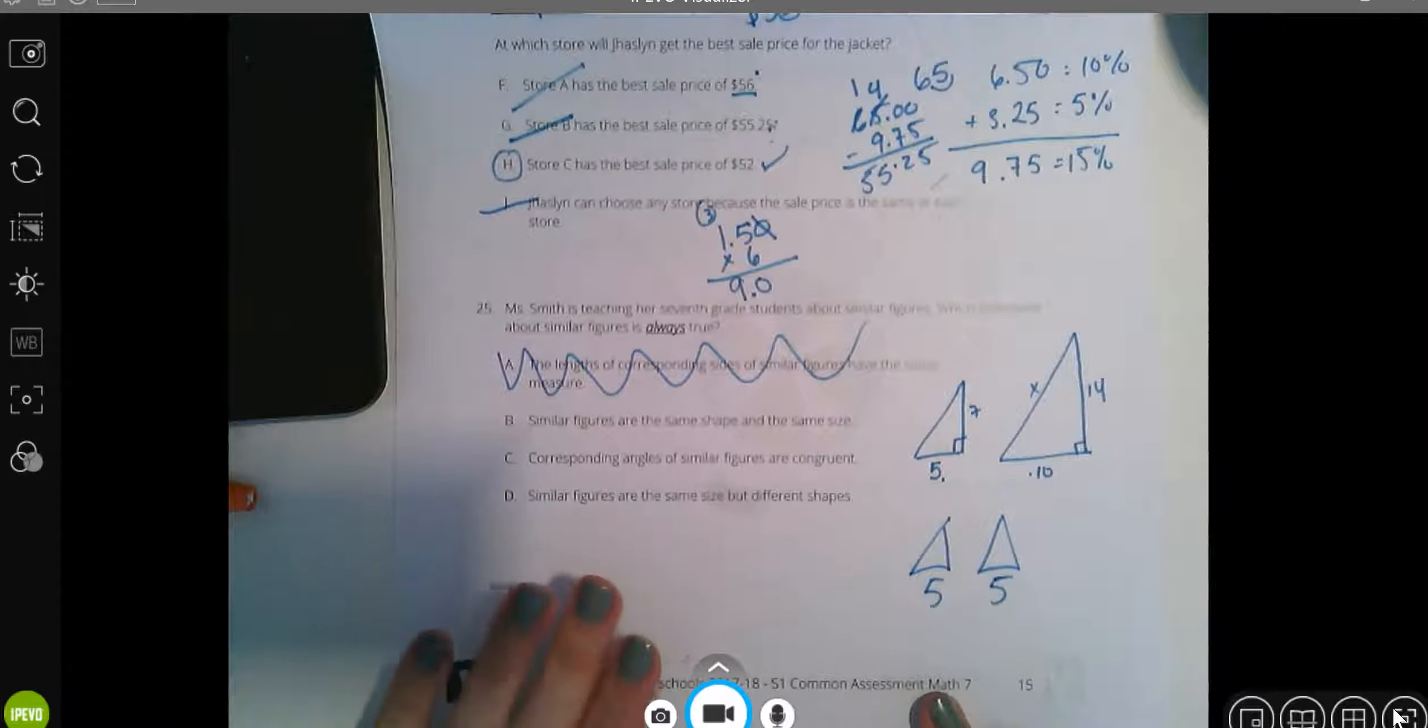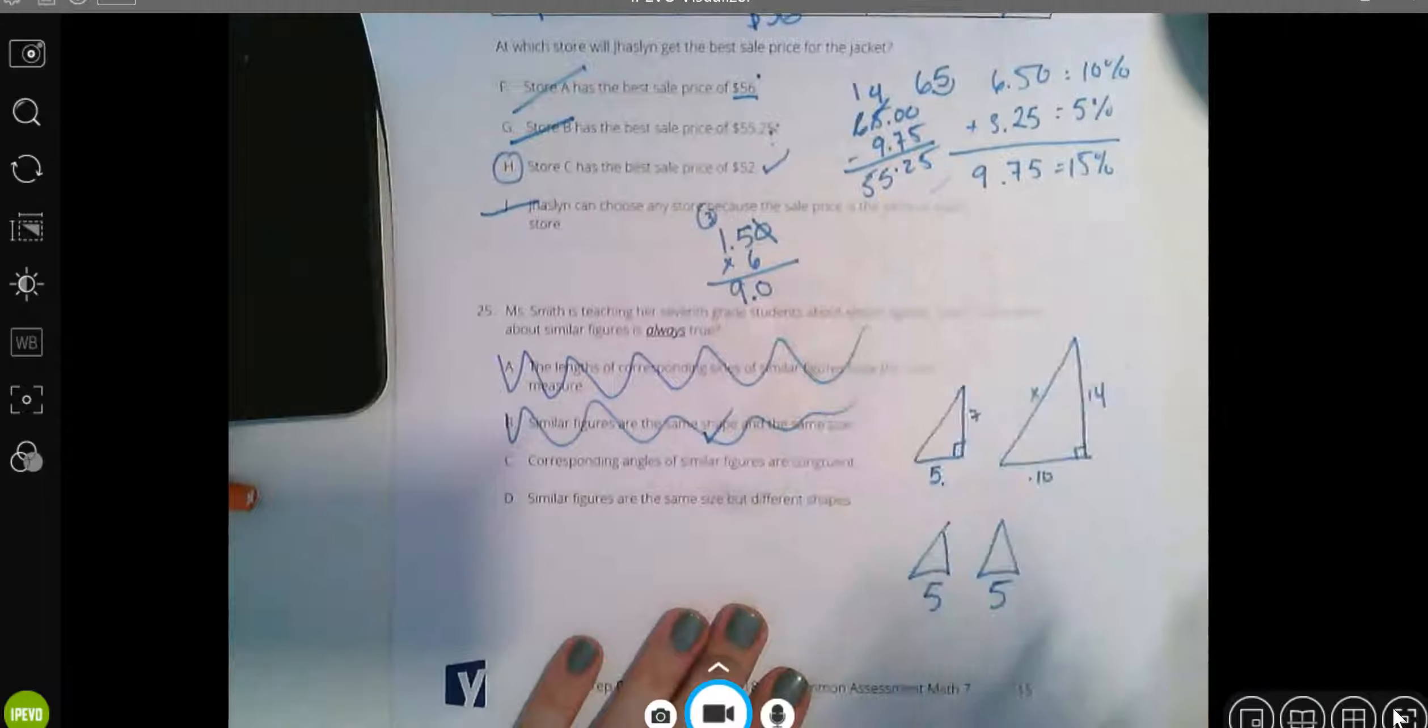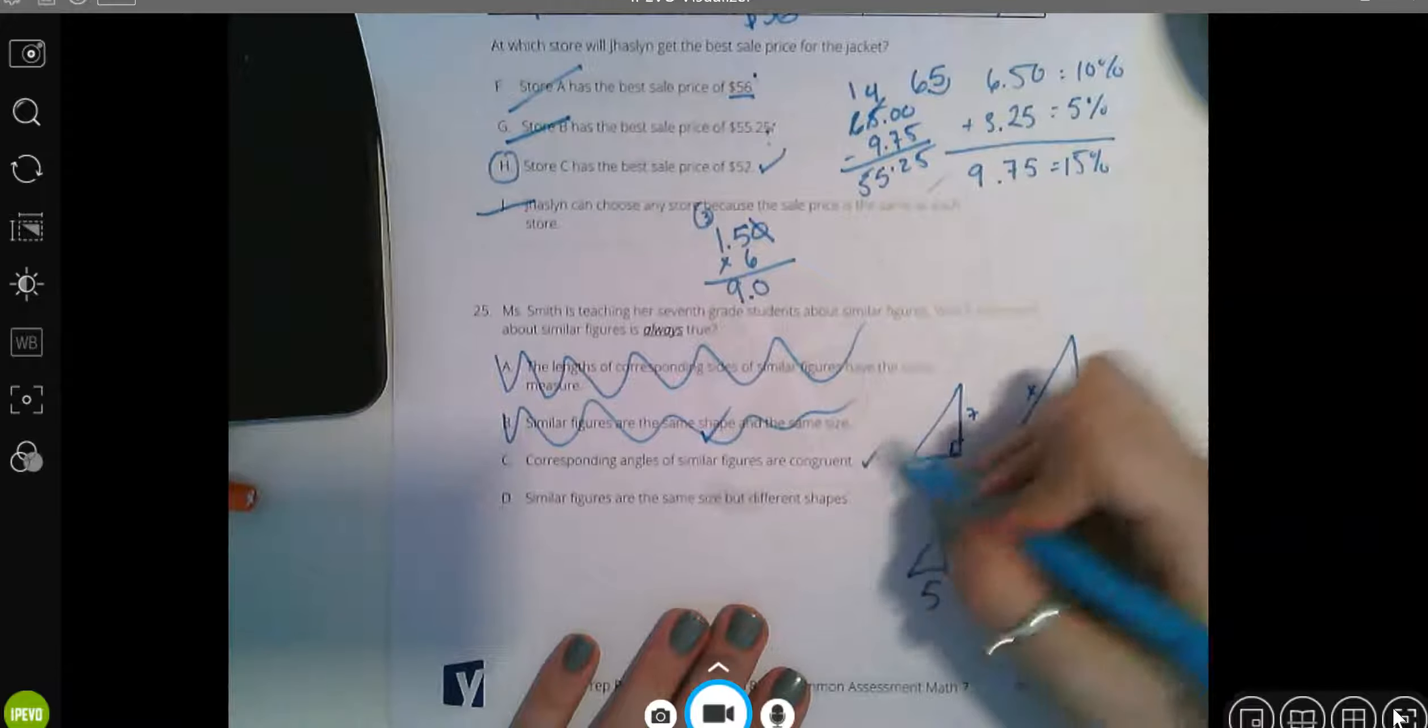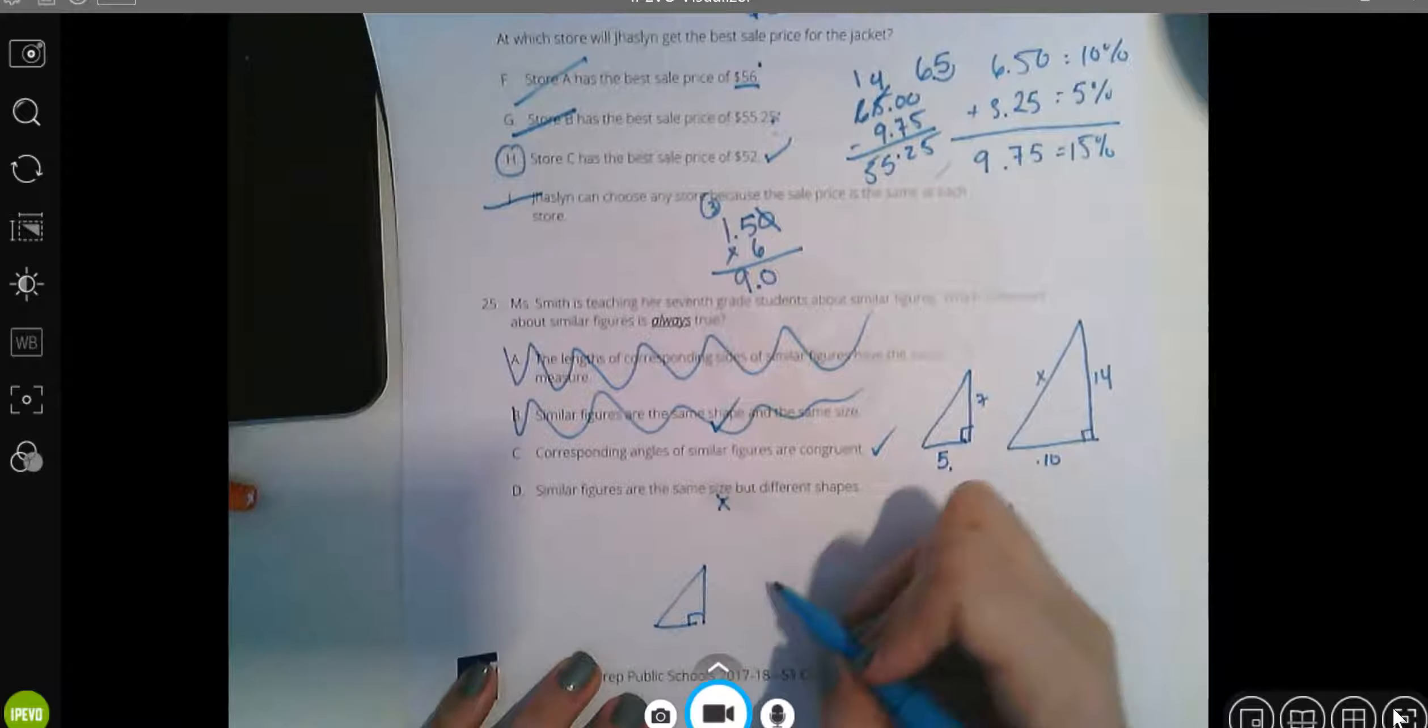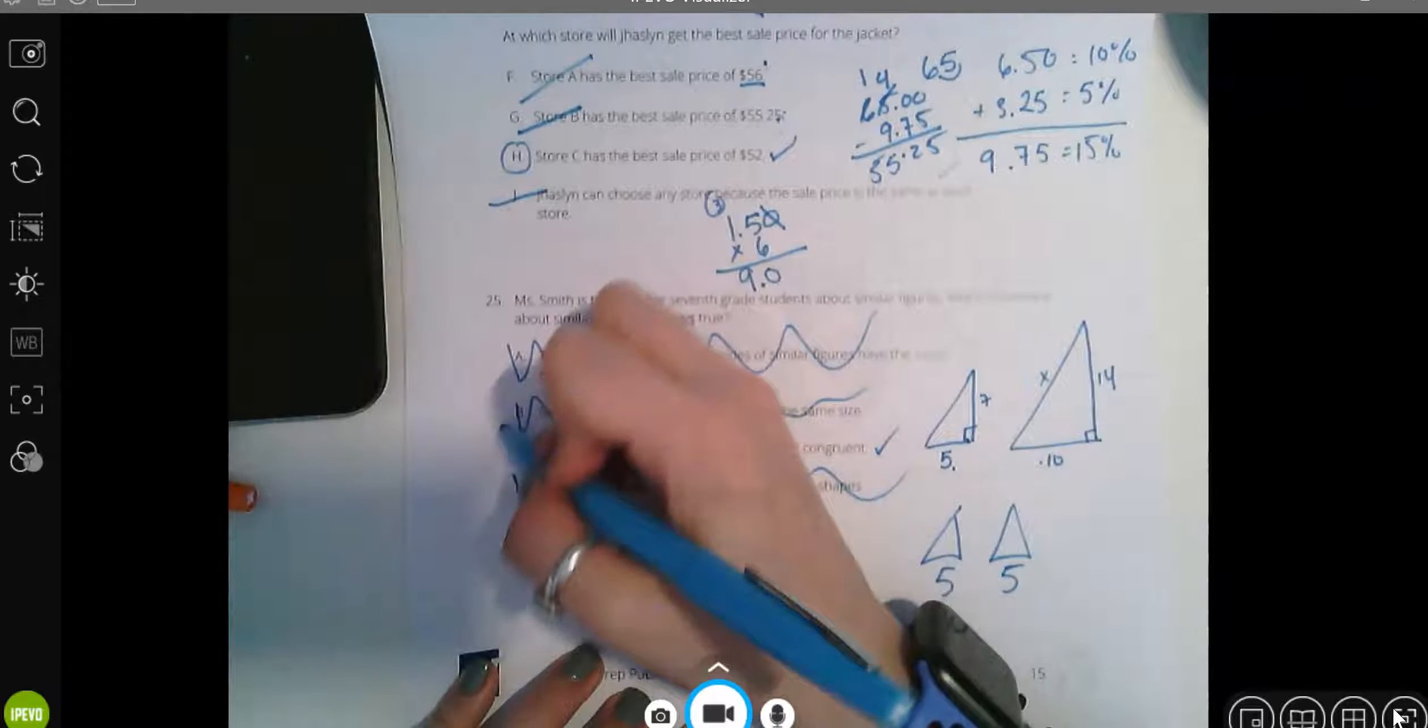Similar figures are the same shape and the same size. Yes, they're the same shape. They're not always the same size. Maybe once in a while they are, but these two are different sizes even though they're similar triangles. Corresponding angles of similar figures are congruent. This right angle, this right angle, doesn't matter how big they are, that's 90 degrees. That sounds pretty right to me, but let me go read the last one. Similar figures are the same size, not always true, but different shapes. You cannot tell me that this right triangle is similar to this really badly drawn star. So the answer is C.